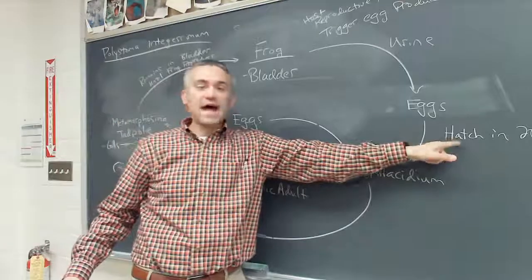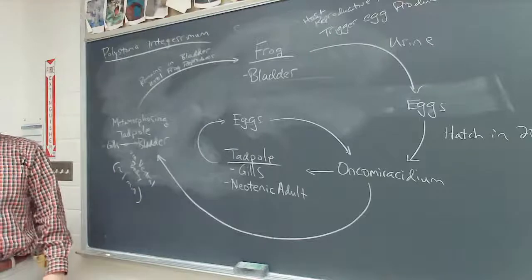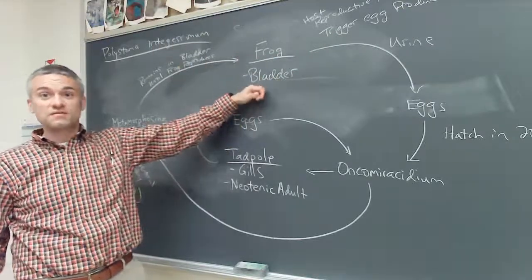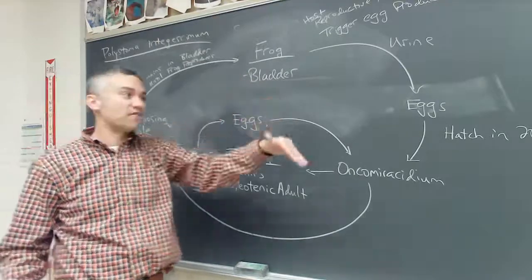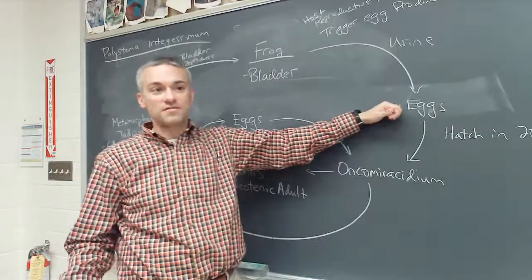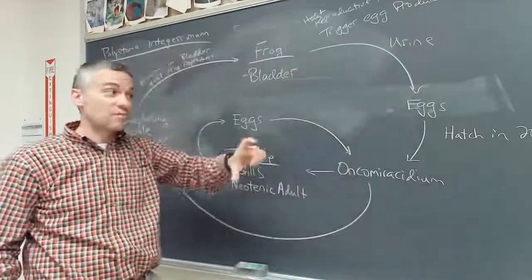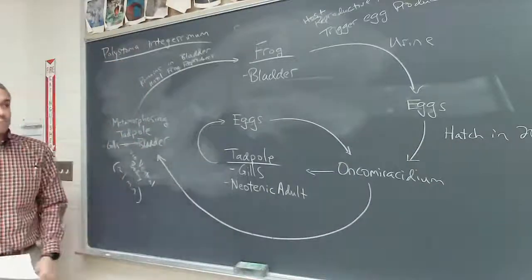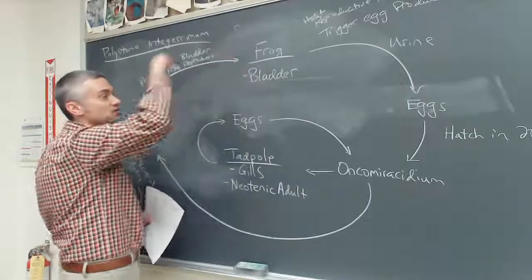Likewise, why do we hatch in 20 to 50 days? We're waiting for the frog eggs to hatch. The reproductive hormones stimulate egg production around the same time frogs are laying eggs. Since the oncomiracidium are short-lived, we don't want them to hatch until the tadpoles are active. So you have your external stage and your internal stage.